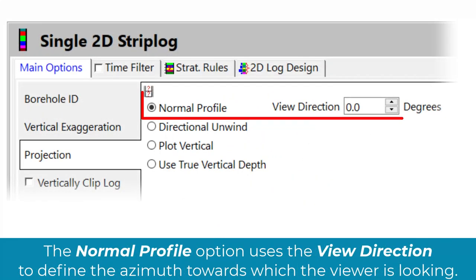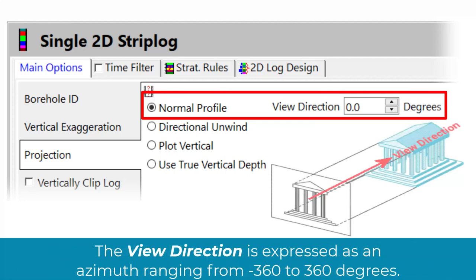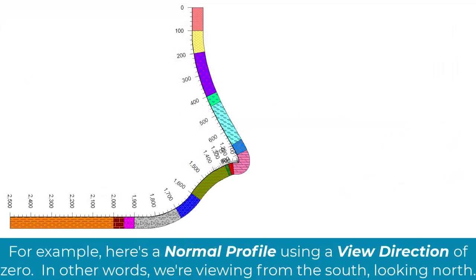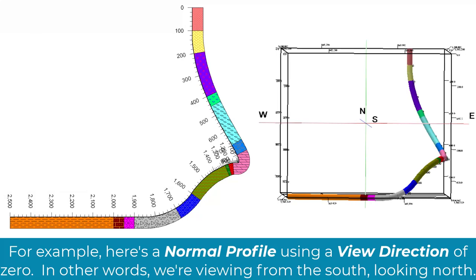The normal profile option uses the view direction to define the azimuth towards which the viewer is looking. The view direction is expressed as an azimuth ranging from minus 360 to 360 degrees. For example, here's a normal profile using a view direction of 0 — in other words, we're viewing from the south looking north.